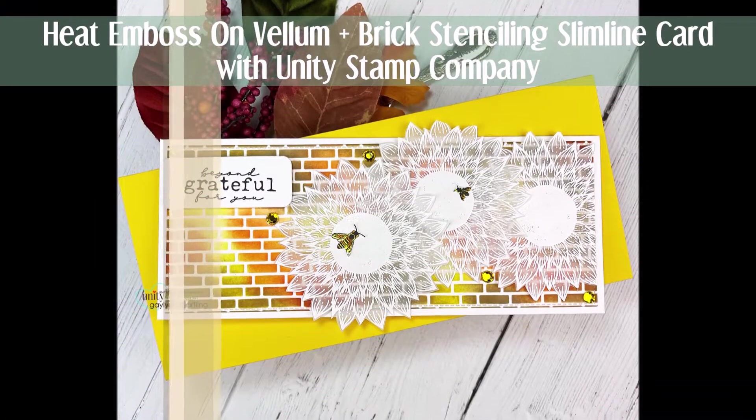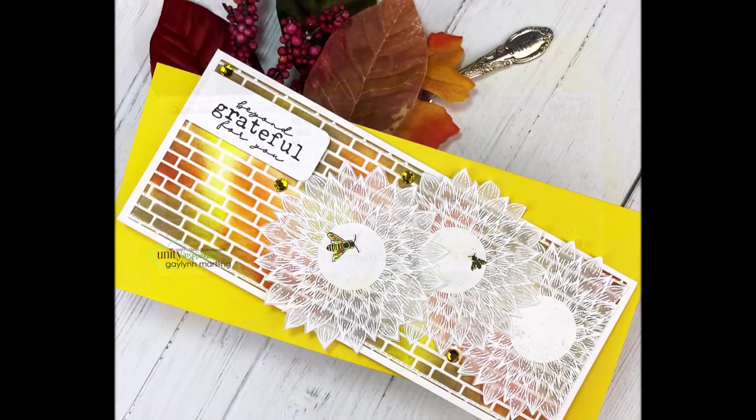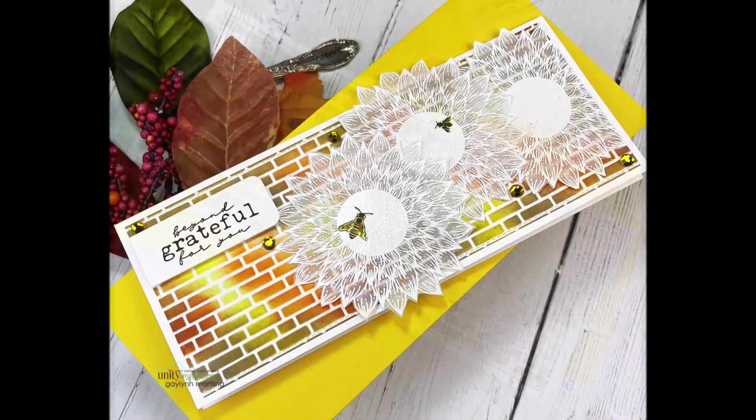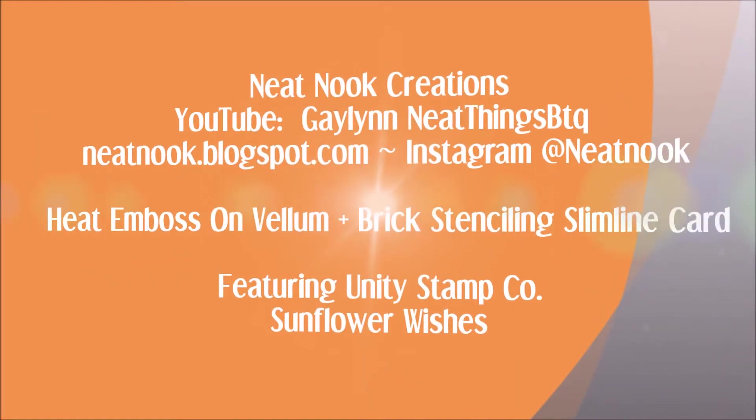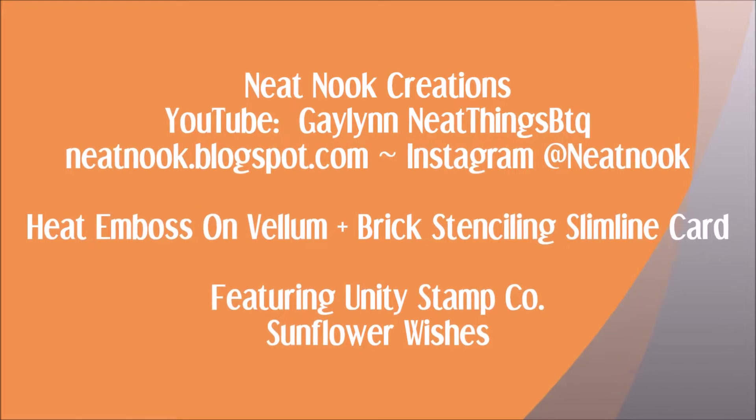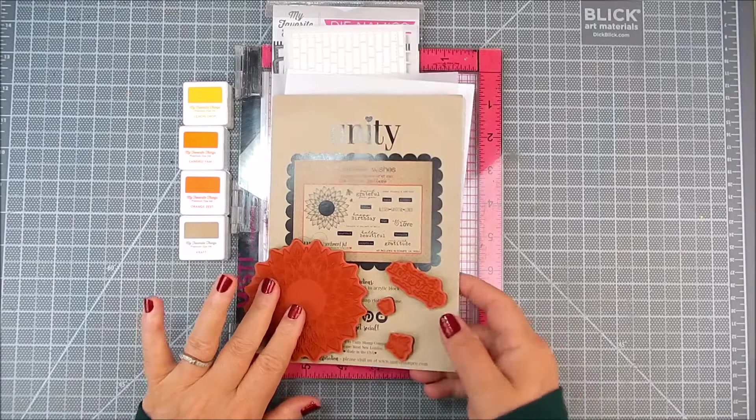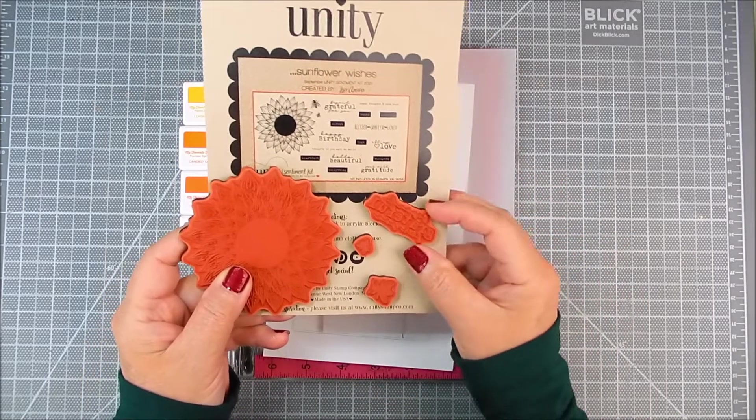Hello, this is Galen Martling and today I'm going to show an autumn slimline card with sunflowers that are embossed with heat embossing on vellum. The color is going to be in the background with brick stenciling. Here is my version using this beautiful kit by Unity.